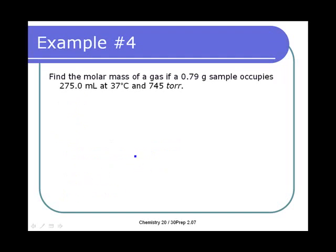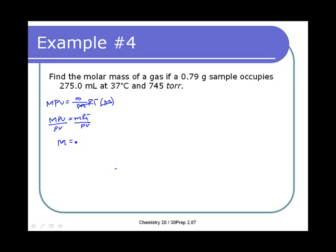Another example: find the molar mass of a gas if 0.79 grams occupy 275 milliliters at 37°C and 745 torr. Since we need molar mass, we use PV = (mass/molar mass) × RT and isolate molar mass. Multiply both sides by molar mass: M·PV = m·RT, then divide both sides by PV: molar mass = mass × RT / (P × V).